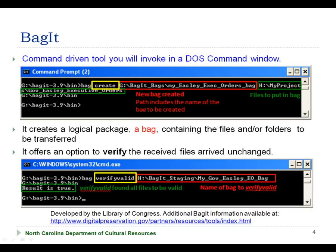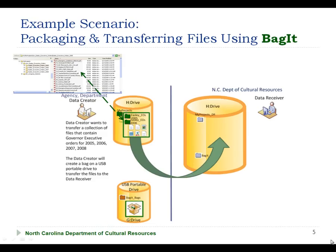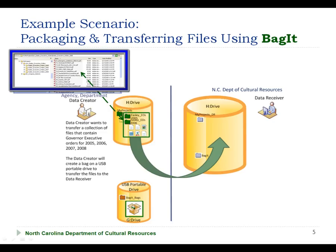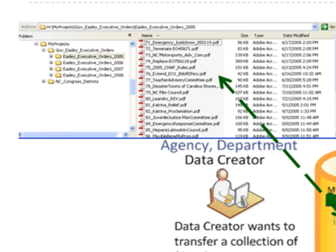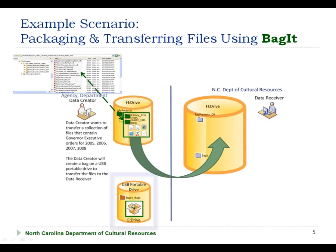Let's look at what the general process looks like for a file sender to package, verify, and send a bag, and for the file receiver to verify and unpack the received bag. In our example scenario, we have a collection of governor executive orders that we want to transfer to the Department of Cultural Resources. They are organized into a series of folders arranged by year for 2005, 2006, 2007, and 2008. In our example, we will use a USB portable drive to transfer the files.